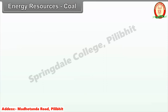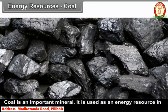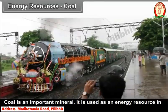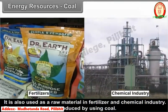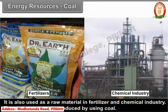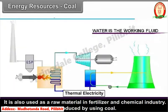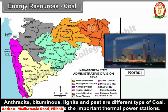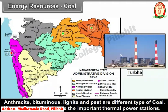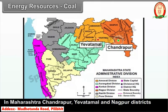Coal is an important mineral used as an energy resource in railway transportation and as a raw material in the fertilizer and chemical industries. Thermal electricity is also produced using coal. Anthracite, bituminous, lignite, and peat are different types of coal. Koradi, Paras, and Turbe are important thermal power stations. In Maharashtra, Chandrapur, Yavatmal, and Nagpur districts have coal mines.